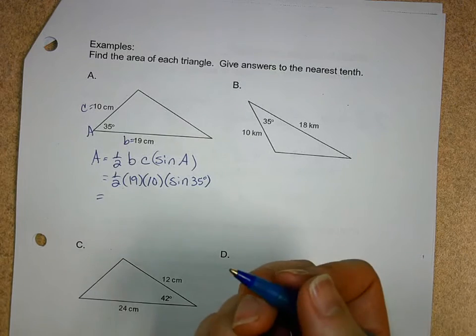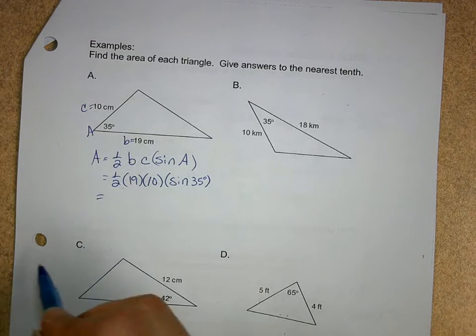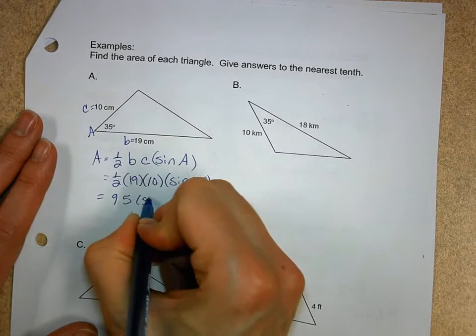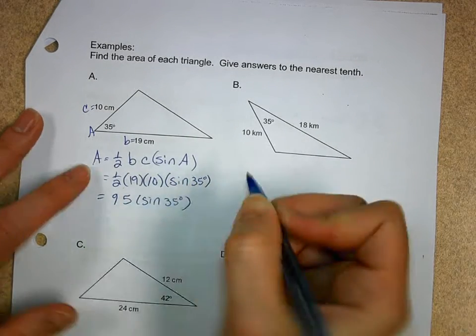but if you do that, you should end up getting one half of 10 is 5, 5 times 19, should be like 95, times the sine of 35 degrees, but you don't have to do that.